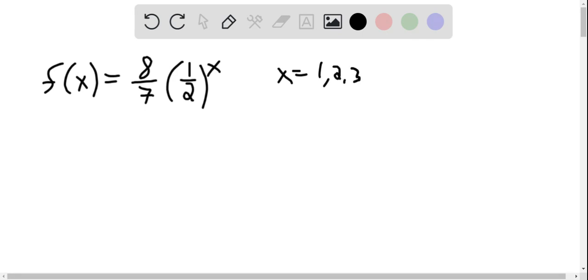Now in order to verify it's a probability mass function, we need to show that the sum of the f of x values is equal to 1. That just means plug in all of those x values.